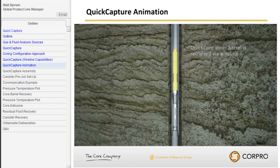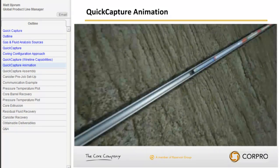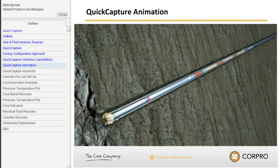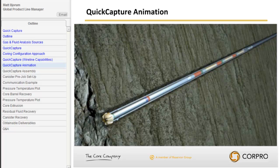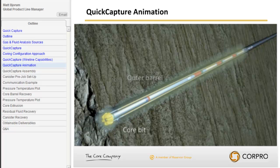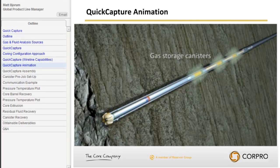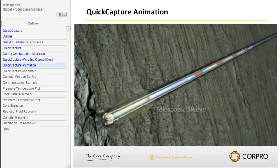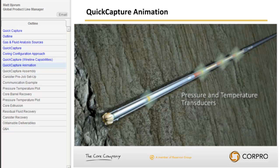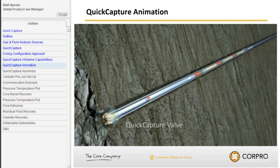Once coring is underway, the core is stored safely in the inner barrel. Once the barrel is filled, the inner barrel assembly can be extracted via wireline. Once the quick capture coring interval is identified, the pressure coring assembly is pumped into place using the same wireline platform without tripping tools out of the hole. The quick capture outer assembly consists of the same swivel assembly, outer barrel, and core bit. The inner assembly consists of gas storage canisters to collect any expelled gas or fluids during the trip out of the hole, a telescoping sleeve to collect the core, and pressure and temperature transducers to monitor coring operations.